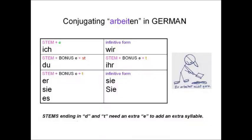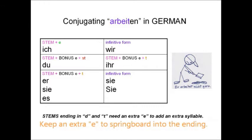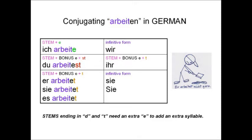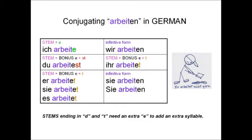This is the verb arbeiten — arbeiten means to work. Our stem is Arbeit. For the du form and the er, sie, es form, I'm going to keep that E after the final T in the stem so I can springboard into the ending. For the ich form: ich arbeite. For the du form, stem plus E plus ST: du arbeitest. For the er, sie, es form, stem plus E plus T: er arbeitet. For the plural forms: wir arbeiten, ihr arbeitet, sie arbeiten.